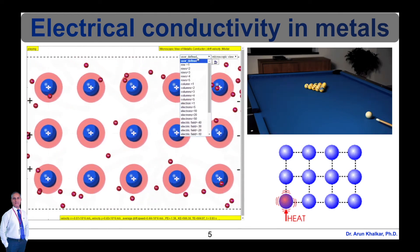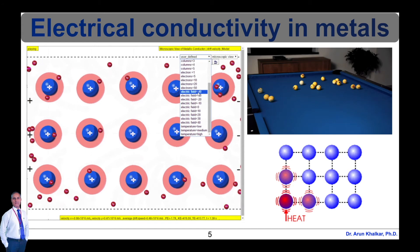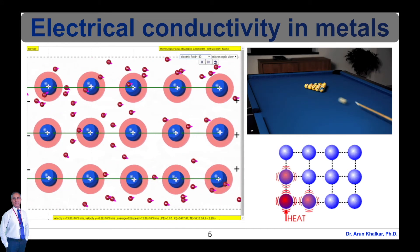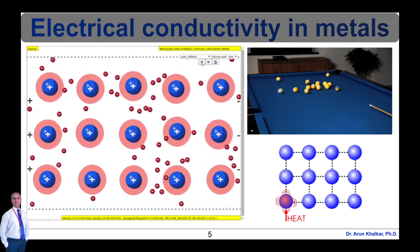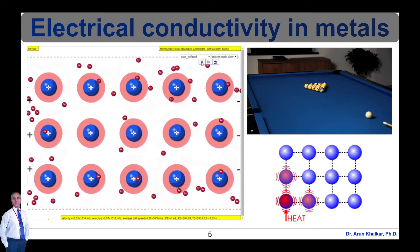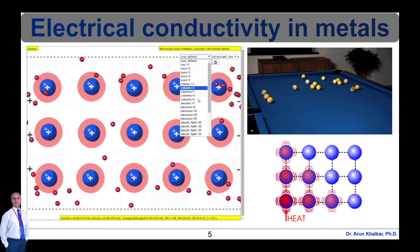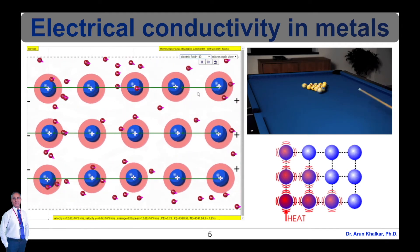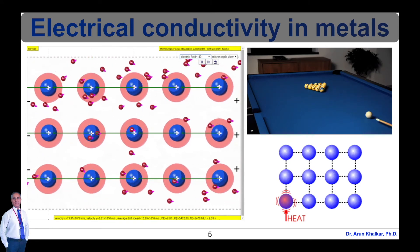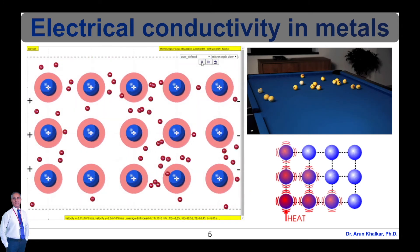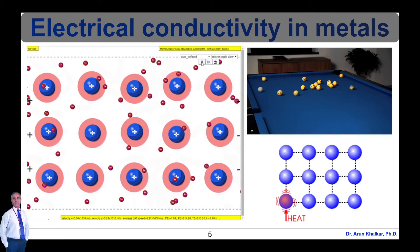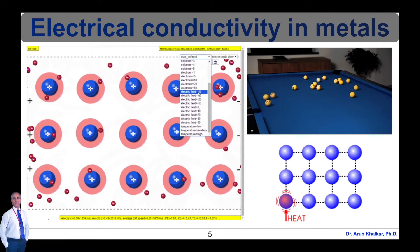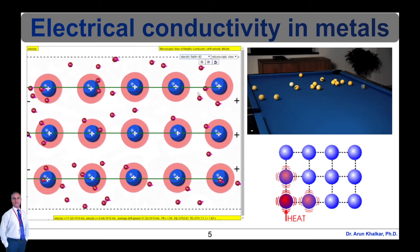Under an electric field, free electrons move through the metal much like billiard balls knocking against each other, passing an electric charge as they move. Electrical resistivity, also called specific electrical resistance or volume resistivity, and its inverse, electrical conductivity, is a fundamental property of a material that quantifies how strongly it resists or conducts electric current. A low resistivity indicates a material that readily allows electric current.